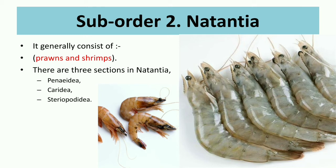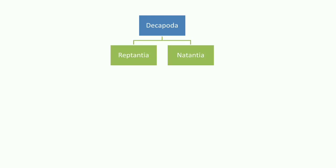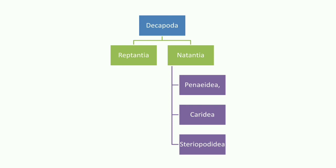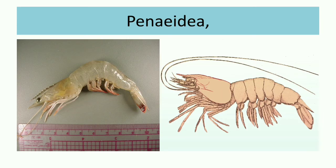Natantia is further divided into three sections: Penaeidae, Caridea, and Sergestidae. So Decapoda divides first into Reptantia and Natantia, and Natantia is then divided into these three sections.